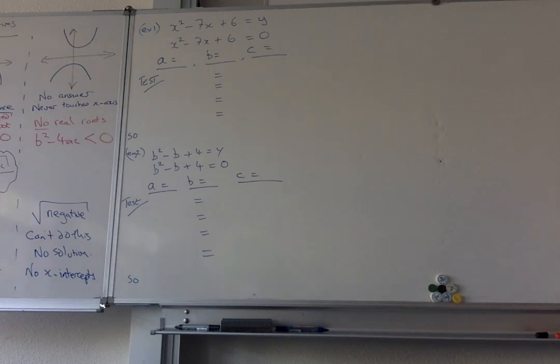Okay, so now we're going to try out a couple of examples about roots of quadratic equations. We know there's three types. There's two answers that cross the x-axis when you have two real and different roots, and that's when b squared minus 4ac is bigger than zero.